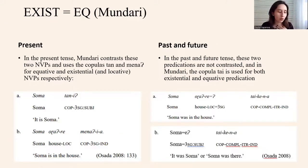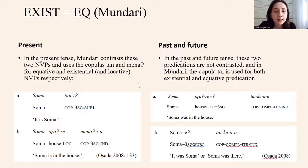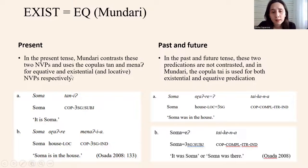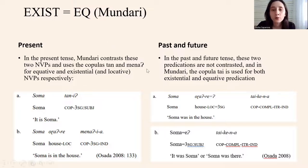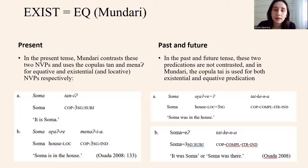Mundari is a special case, since in present tense Mundari contrasts these two nonverbal predications, and uses copula 'tan' and 'mena' for equative and existential/locative nonverbal predicates respectively. But in past and future tenses, these two predications are not contrasted, and copula 'tie' is used for both existential and equative predication.